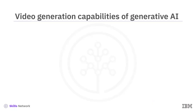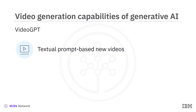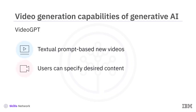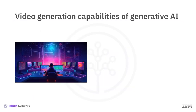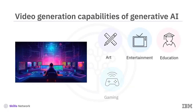For instance, a popular AI model, VideoGPT, follows textual prompts users provide to generate new videos. Users can specify the desired content and guide the video generation process, including completion, editing, synthesis, prediction, and style transfer. These generated videos can be used in domains such as art, entertainment, education, gaming, medicine, and research.